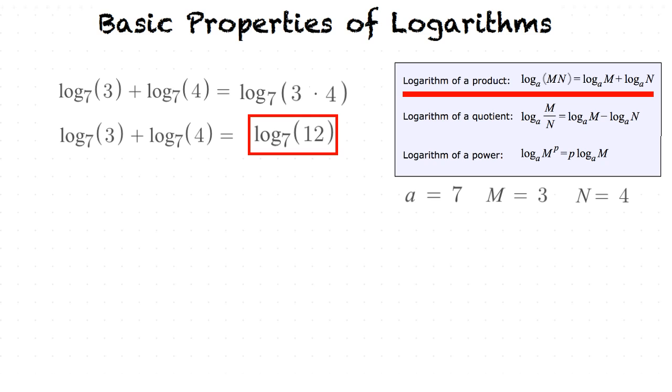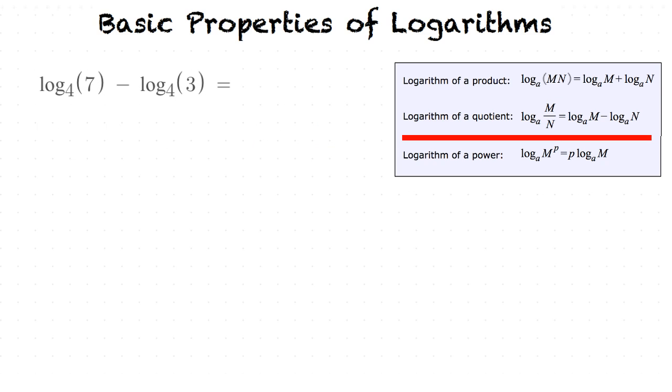Now let's do a problem focusing on the quotient rule. We have log base 4 of 7 minus log base 4 of 3. In this case, our a is going to be equal to 4, our m is going to be equal to 7, and our n is going to be equal to 3.